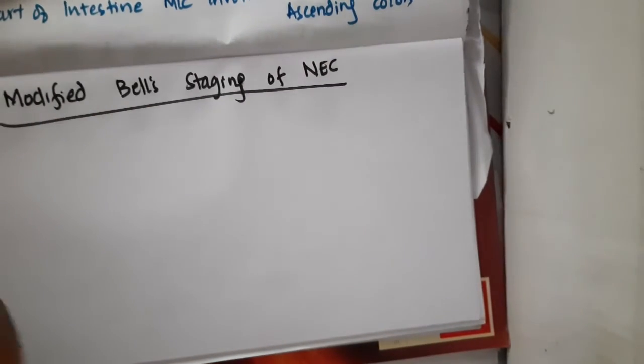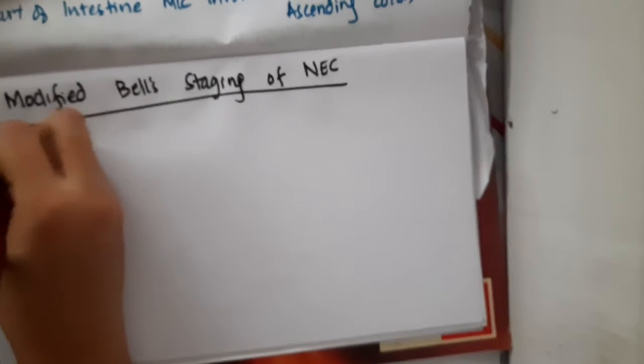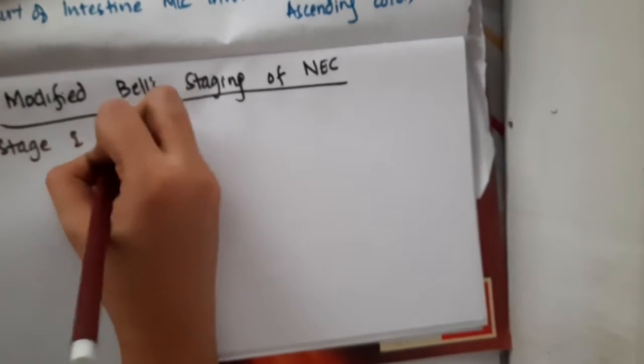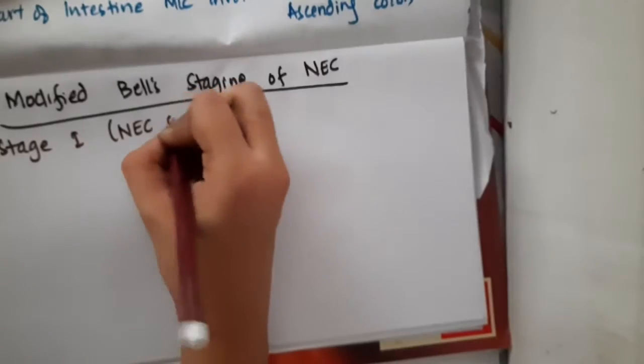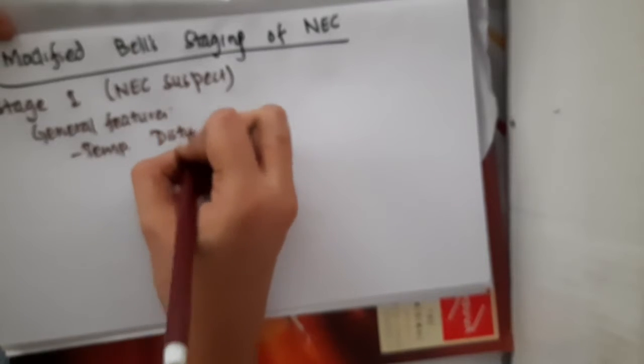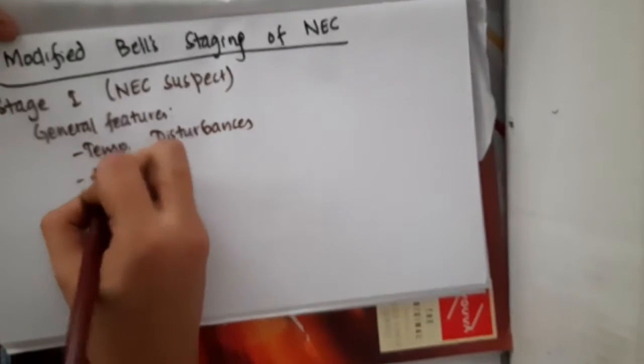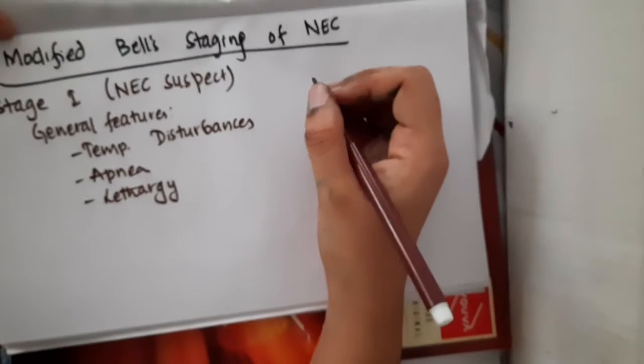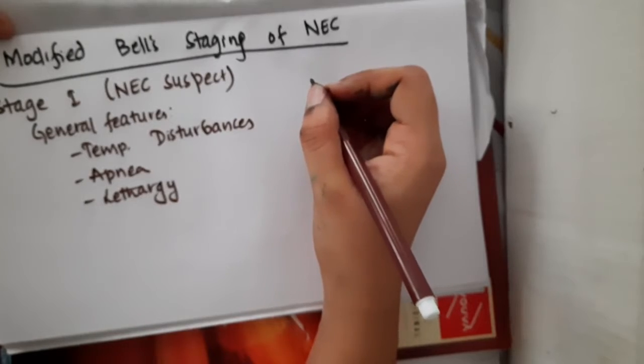There is a staging system called the modified Bell staging system for necrotizing enterocolitis. In stage 1, called NEC suspect, the general features include temperature disturbances, apnea, and lethargy.